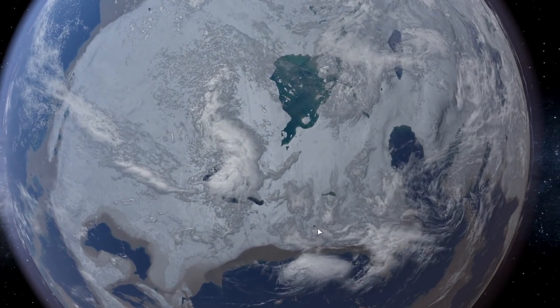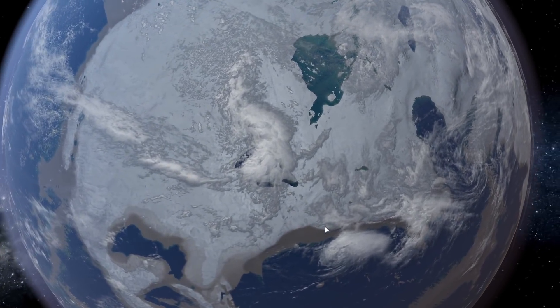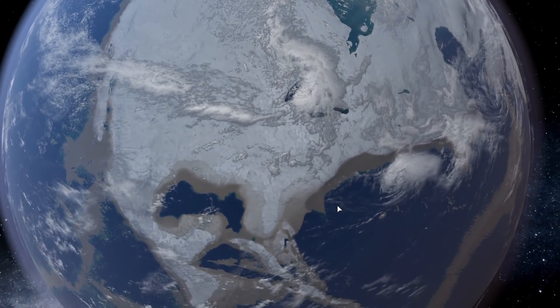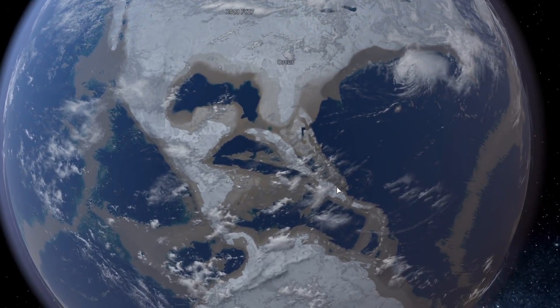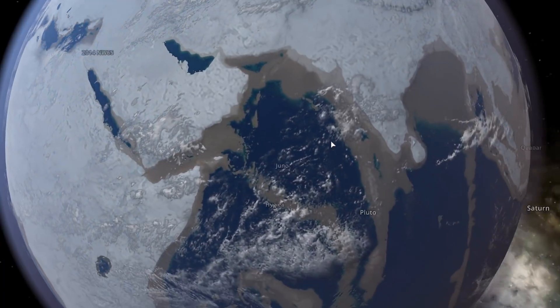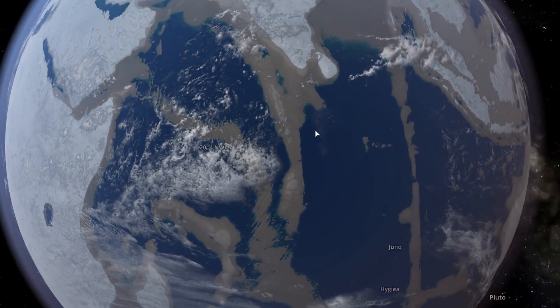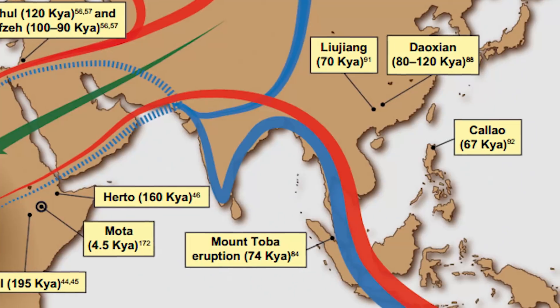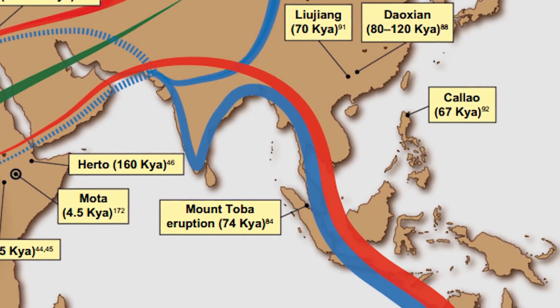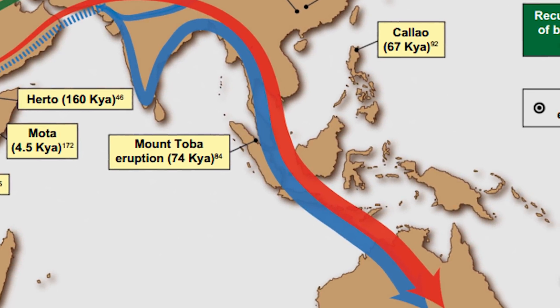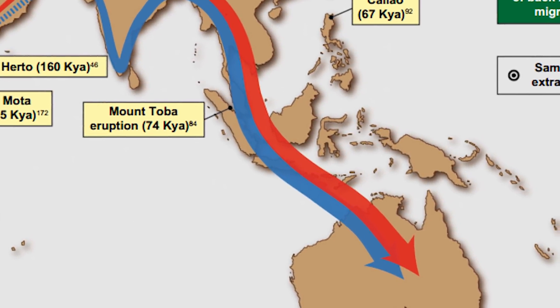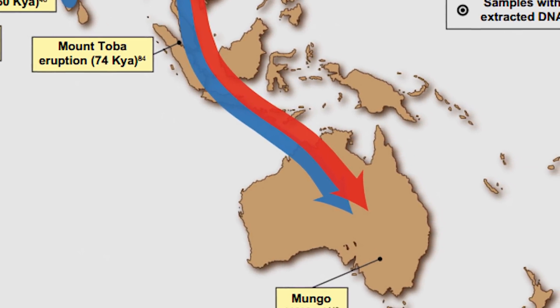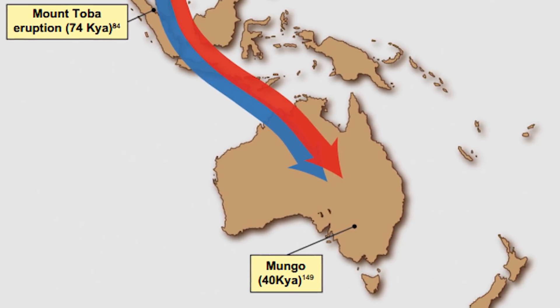It covered a huge part of the planet, but because of this it lowered the levels of water, which exposed huge parts of land that were inaccessible before, allowing ancient humans to travel from one region to another. This is exactly how ancient humans were able to reach Australia, something that probably happened around 50 thousand years ago.